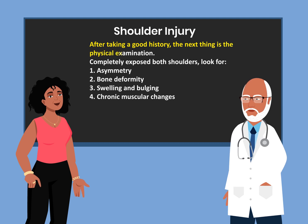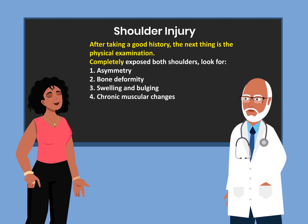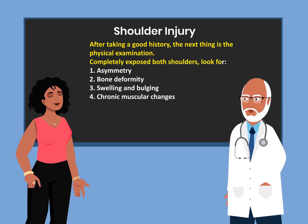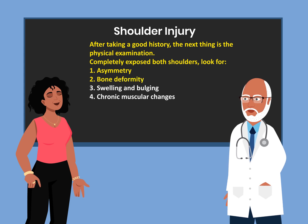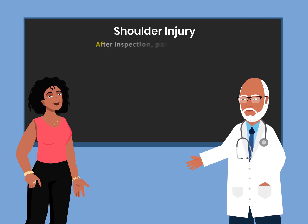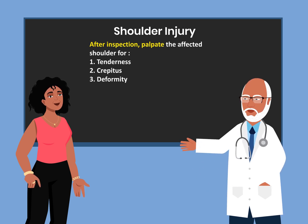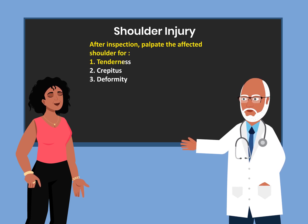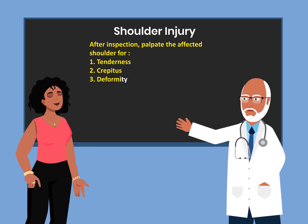After taking a good history, the next thing is the physical examination. Completely expose both shoulders looking for: 1. Asymmetry, 2. Bone deformity, 3. Swelling and bulging, and 4. Chronic muscular changes. After inspection, palpate the affected shoulder for tenderness, crepitus, and deformity.